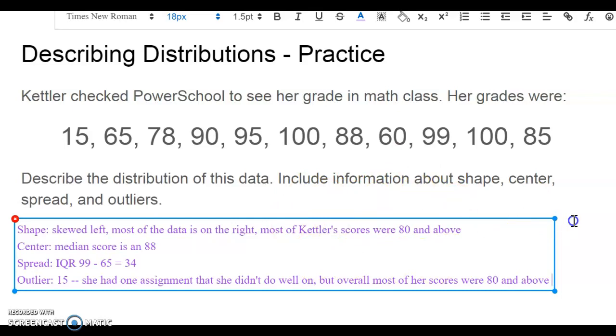Same with her outlier. She had one outlier at 15, which tells us that maybe she was just having a bad day that day. Maybe she didn't study for a test, but overall she scores much higher than that. Her median score is an 88, so her central point, her central score on an assignment is 88, which tells us half of all her scores are higher than an 88 and half of all her scores are lower than an 88. And then we know that her measure of spread, her IQR, is 34. So her middle 50 percent of assignments have a span of 34 points.